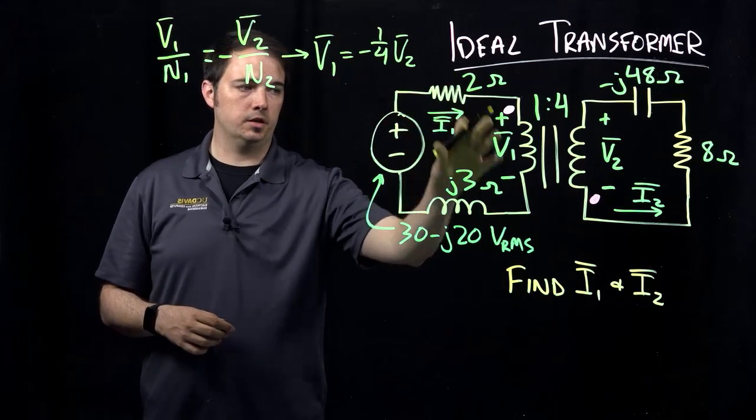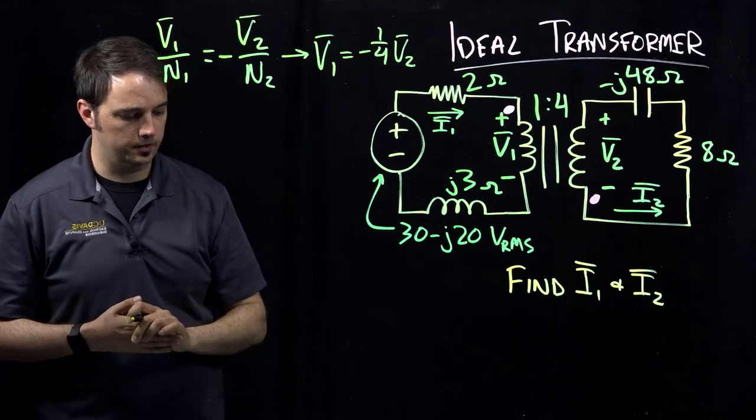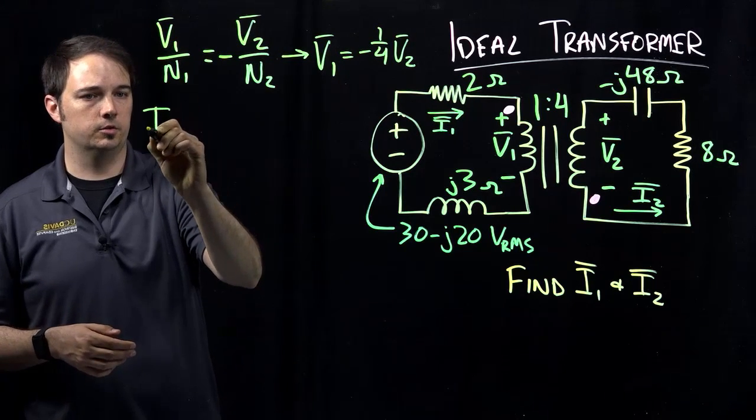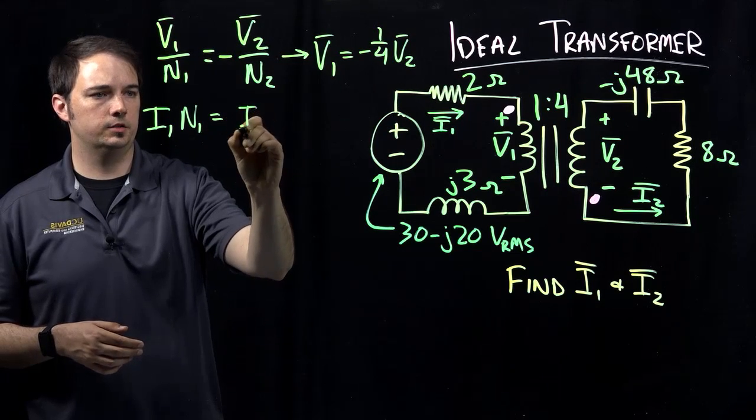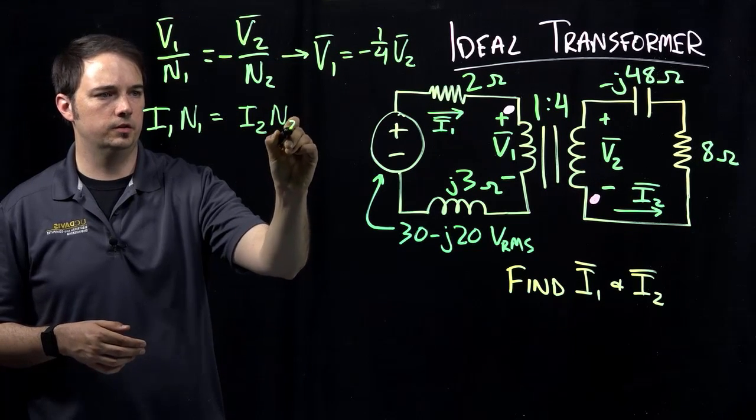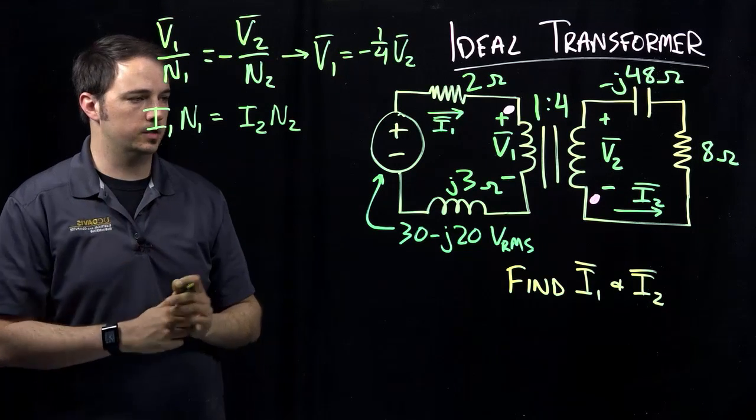All right. Now the second relationship is telling us something about the currents I1 and I2 and how they are related in this ideal transformer. So that relationship looks like I1 times N1 equals I2 times N2. Now again, here for the dot convention in this equation, what we do is look at the flow of the currents.